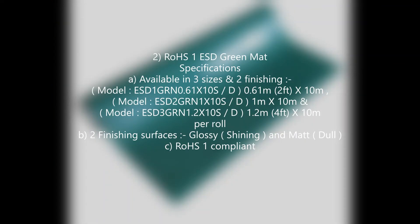Product 2: RoHS 1 ESD Green Mat Specifications. A. Available in three sizes — Size 1: 0.61 m (2 ft) x 10 m per roll; Size 2: 1 m x 10 m per roll; Size 3: 1.2 m (4 ft) x 10 m per roll. B. Two finishing surfaces: glossy and matte. C. RoHS 1 compliant.